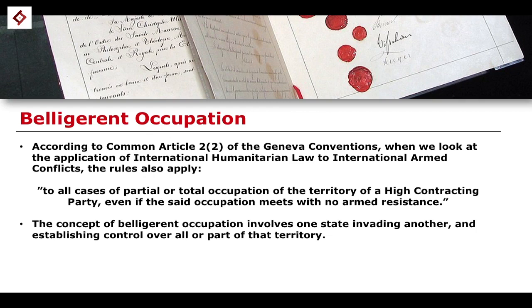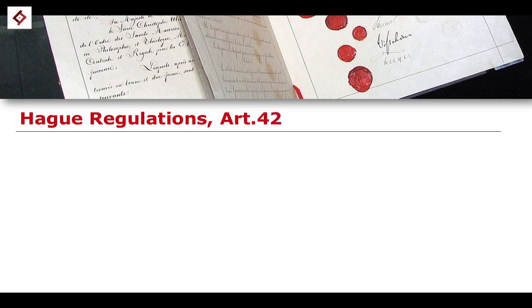The first precondition for the existence of a belligerent occupation is the existence of an international armed conflict — the invasion of one state by another. The second element is the establishment of control over either all or part of the territory that has been invaded. So there are two conditions: you can be in control of only part of the territory, or there may be total occupation — either or.